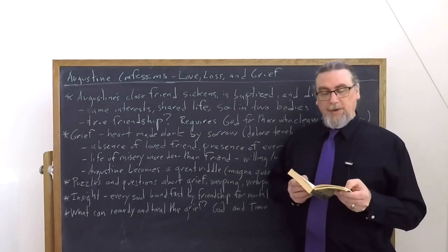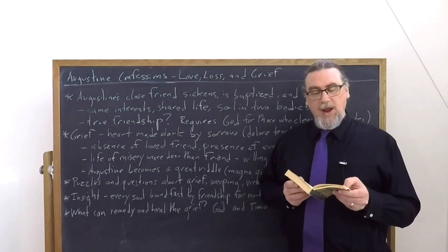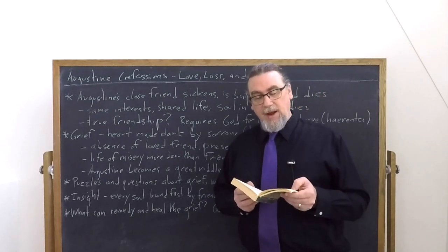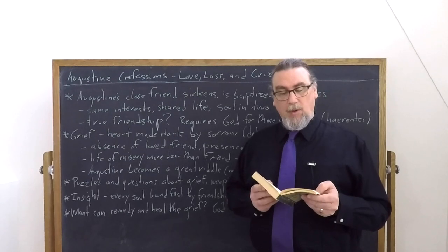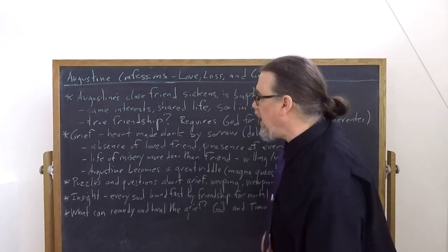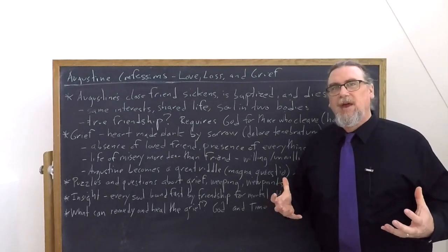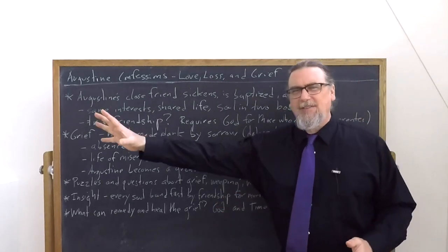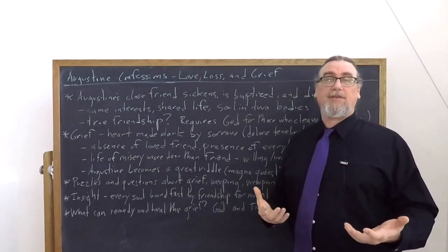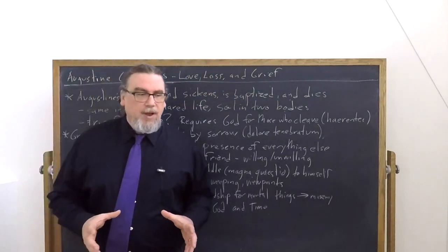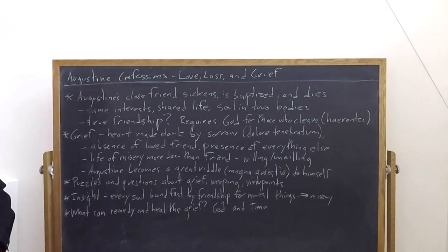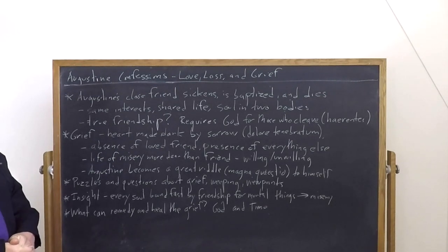He says that everything I looked upon was death. My native place was a torment to me. My father's house, a strange unhappiness. Whatever I had done together with him, my friend, was a cruel torture apart by him. My eyes sought for him on every side and he was not given to them. I hated all things because they no longer held them. And so the absence of the loved friend and the presence of everything else, everything else that in some respect Augustine said, that doesn't deserve to be. Why does he have to die instead of all these other poor slobs over here? This is my friend. Well, this is something that we can encounter and experience when we feel deep grief. The world becomes a different world to the person who is grieving. And this is a big problem.